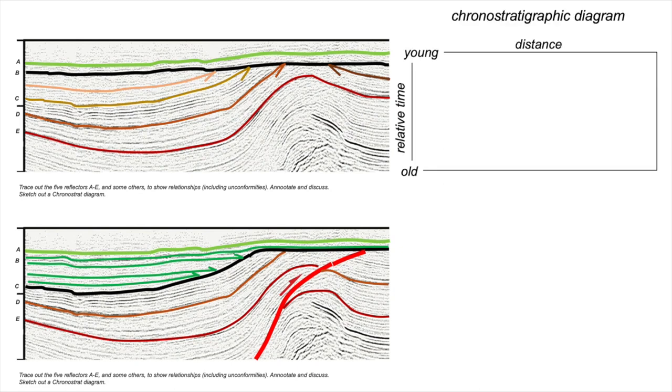A chronostratigraphic diagram plots the horizontal distance over which a particular horizon occurs and places them in their relative order from old to young, assuming a simple law of superposition. The oldest strata are low in our profiles, the youngest ones are shallow. Because horizons are deposited in this context in an instant in time, they plot as horizontal lines on the chronostratigraphic diagram.